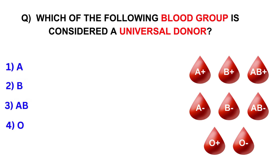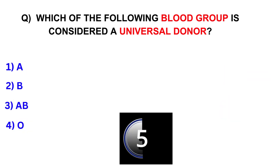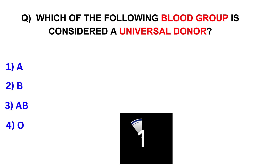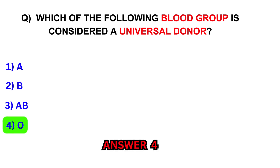Which of the following blood groups is considered a universal donor? A, B, AB, or O. Answer: O.